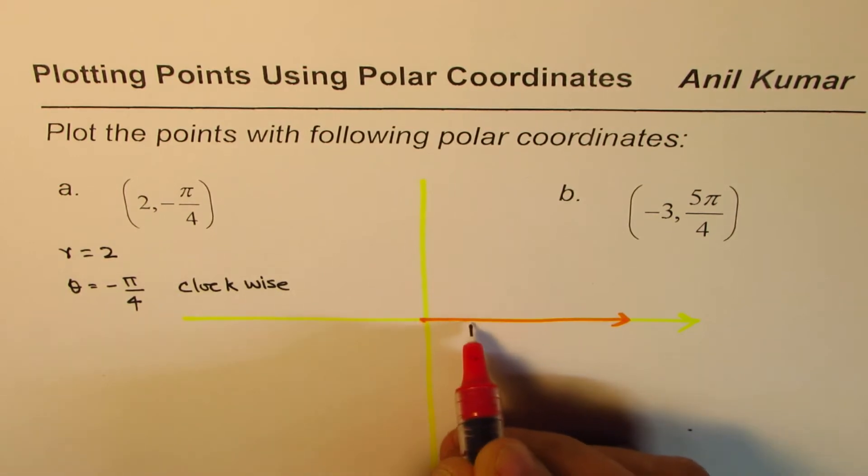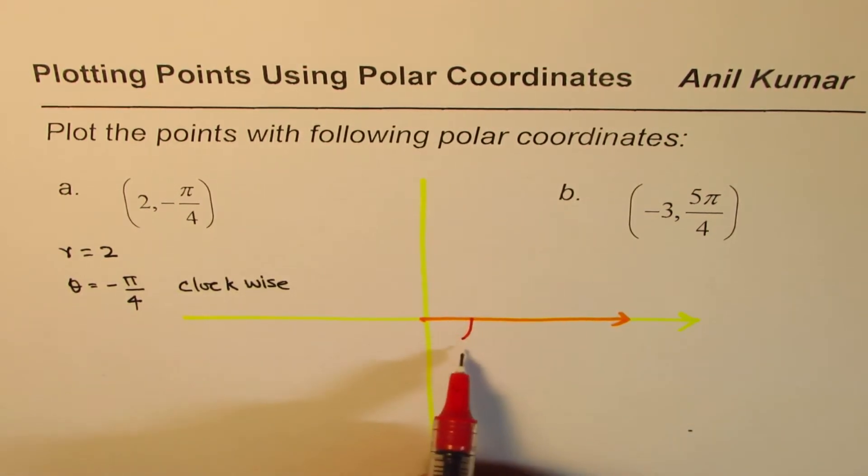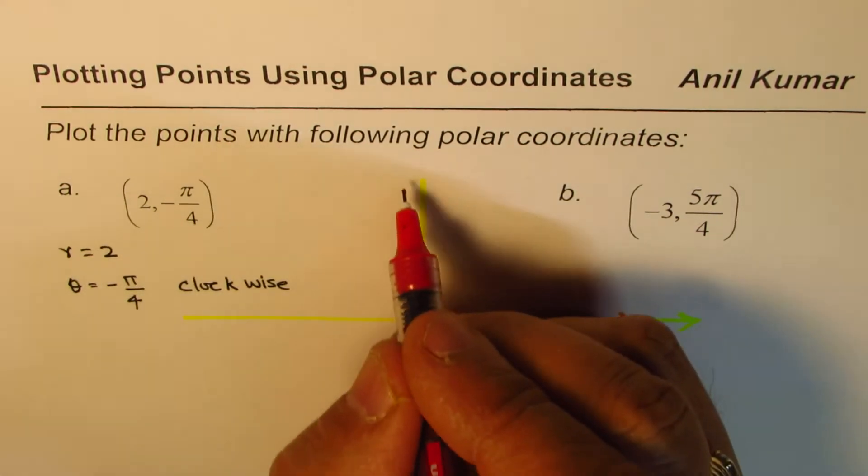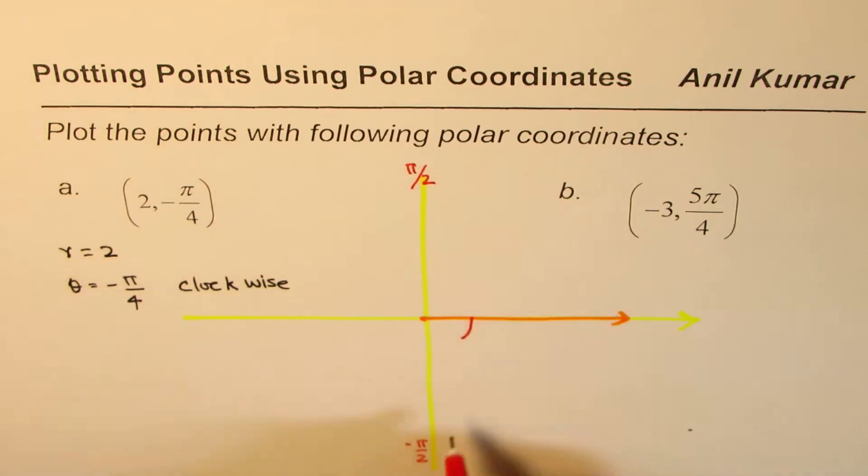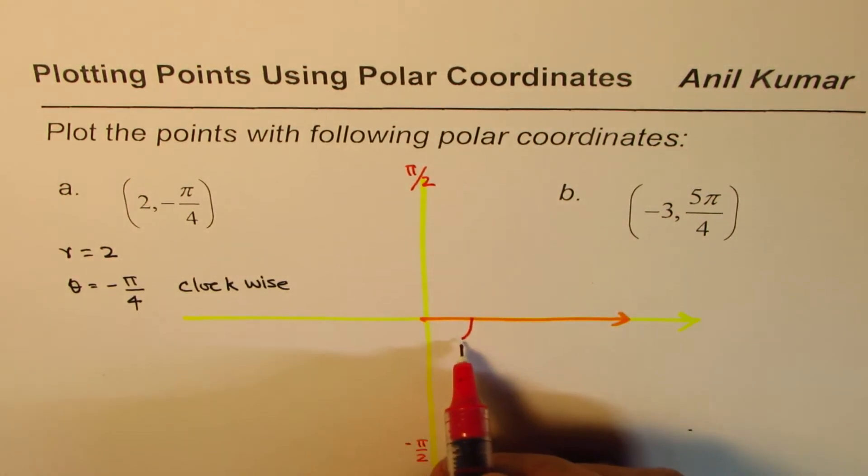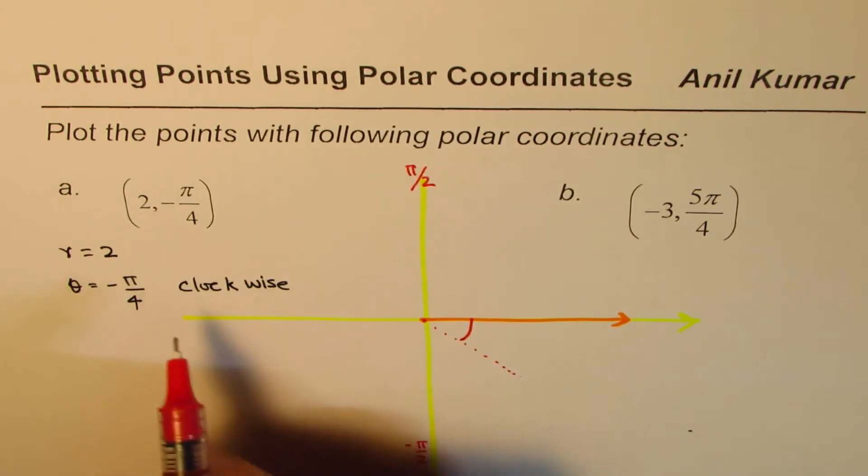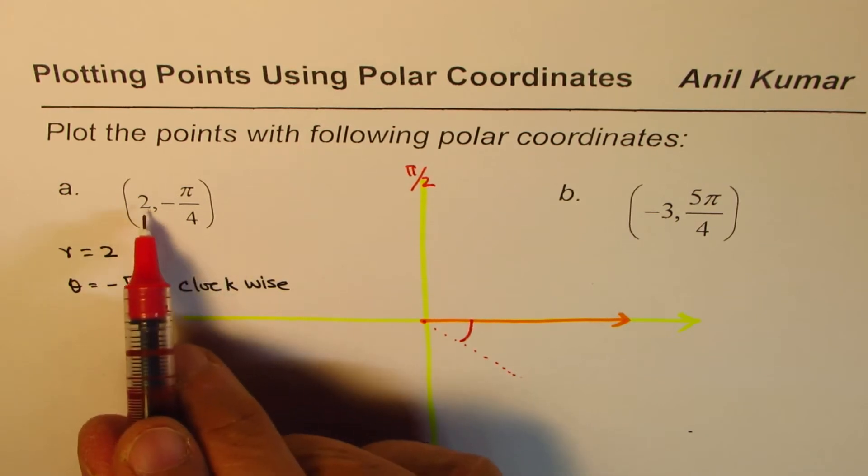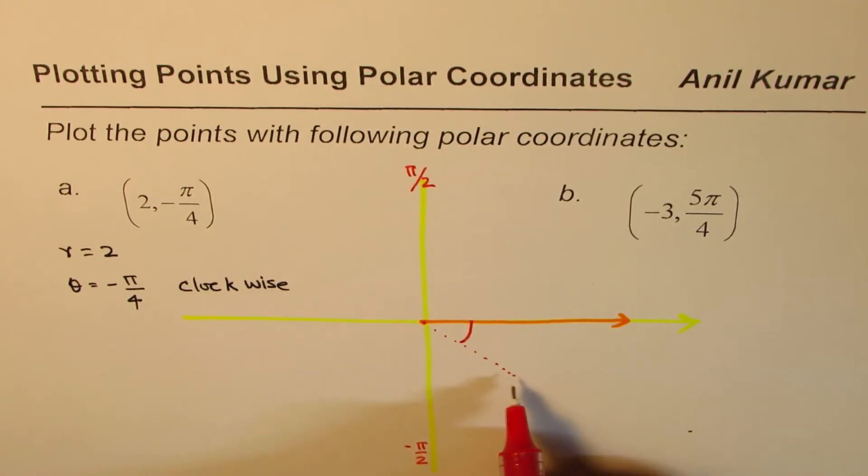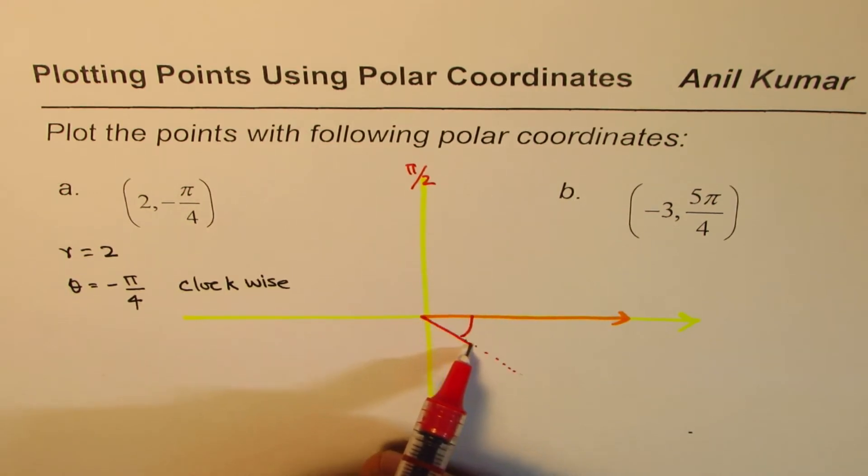Kind of like that much. So this is -π/2 here, we have π/2, and π/4 will be midway between them. So that seems to be π/4. Somewhere along this ray we have our point and we have to mark 2 units to get to the point. And let's say this distance here gives 2 units. So this is 1 unit for us and that is 2 units.